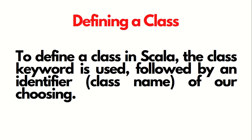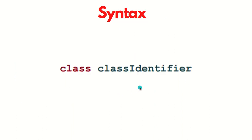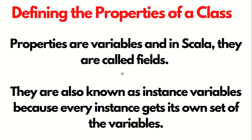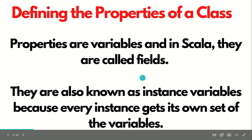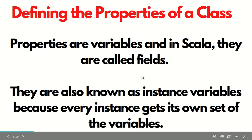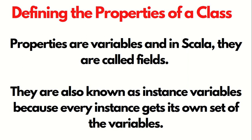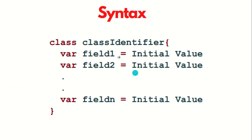How we can define a class? To define a class in Scala, we have to use the class keyword followed by the class name — the syntax is: class space class identifier. How we can define the properties of a class? Properties are nothing but variables, and in Scala they are called fields. They're also known as instance variables because every instance gets its own set of variables, and they need to be defined outside of the methods in the class. The syntax is: class space class identifier, var space field name equal to the initial value.